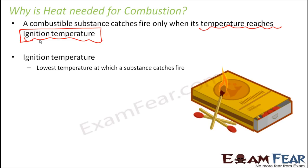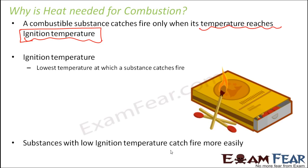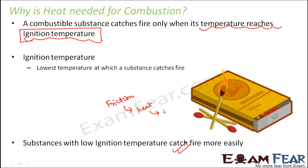If the ignition temperature of a substance is very low, it catches fire easily because the temperature at which it ignites is low. If the ignition temperature is very high, it will not catch fire easily. So substances with low ignition temperature catch fire more easily. Now you will understand why we need to strike the matchstick — friction is generated, friction produces heat, and this heat increases the temperature of the matchstick so it reaches its ignition temperature.